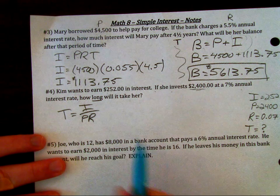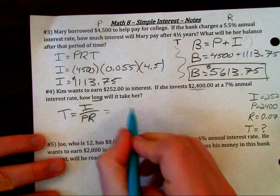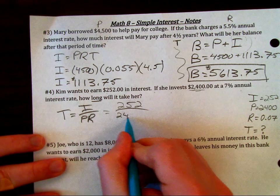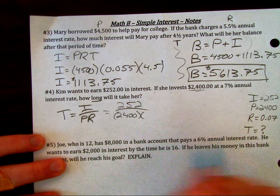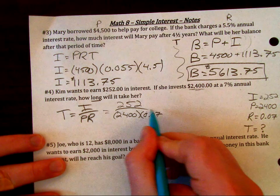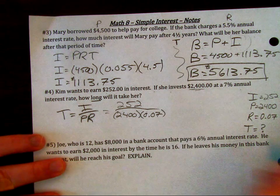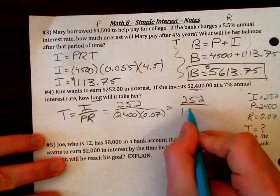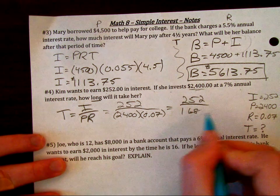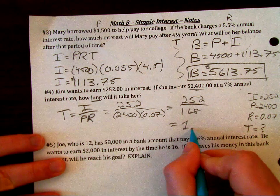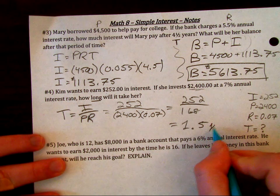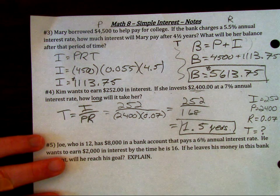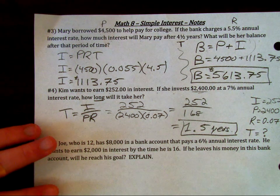You plug in those values: $252 in the numerator and $2,400 times 0.07 in the denominator. Multiplying carefully in the bottom should give you 168, which simplifies to 1.5 years. Try these out for yourself as well and be able to use the correct formulas.